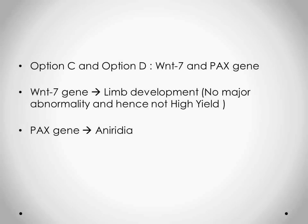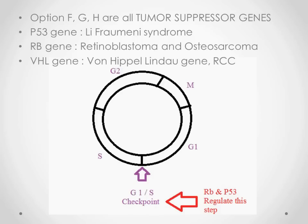Options C and E are not very high yield. The WNT7 gene is involved in limb development but doesn't have an important abnormality strongly associated with it, so it isn't asked frequently. The PAX gene is also relatively low yield, but if you want to remember one associated abnormality, it's aniridia — a disease in which the person does not have an iris in either eye. The iris is the part of the eye that gives it color, and that part is absent in these patients.